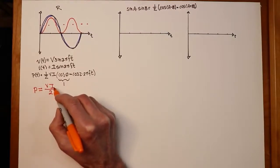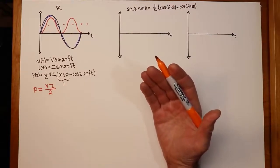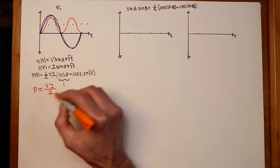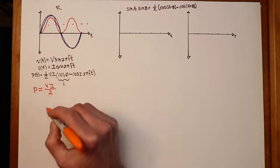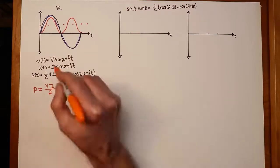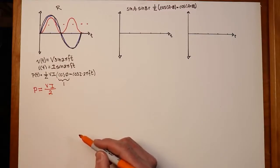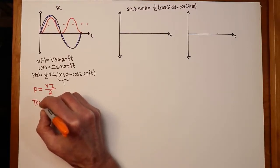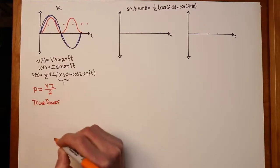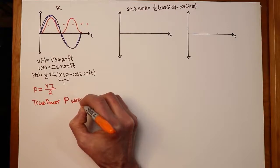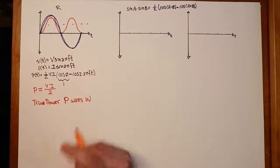Remember that's peak values. Normally we do power calculations with RMS values: V_rms = V/√2 and I_rms = I/√2. So VI/2 equals V_rms × I_rms — they work out the same. This is called true power P, measured in watts (W).